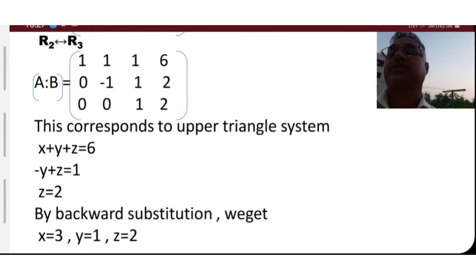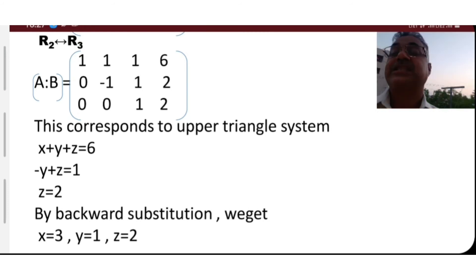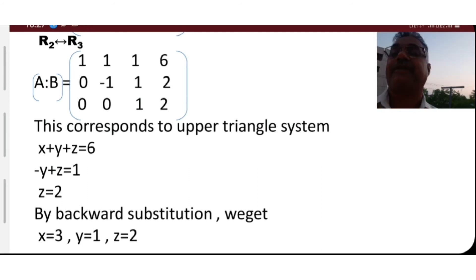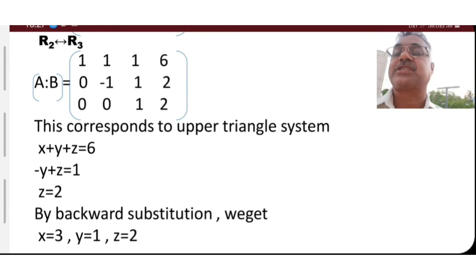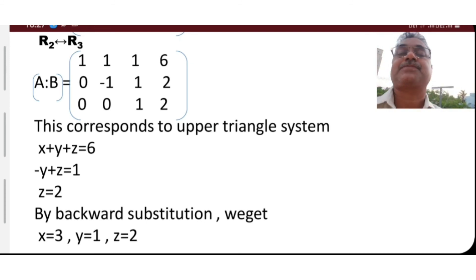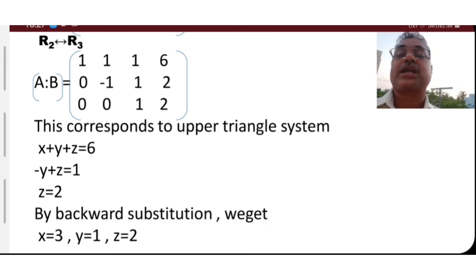By back substitution: from the third row, z is equal to 2. Substituting z equals 2 into the second equation, minus y plus 2 equals 1, giving y equals 1. Substituting y equals 1 and z equals 2 into the first equation x plus y plus z equals 6, we get x equals 3.